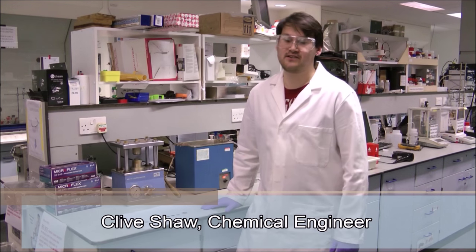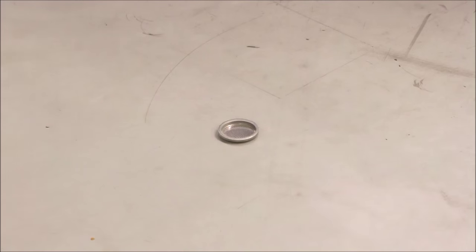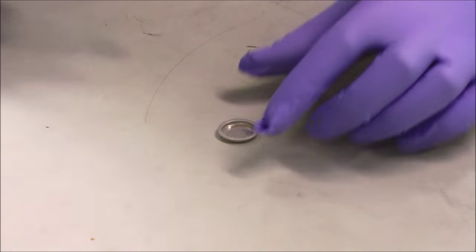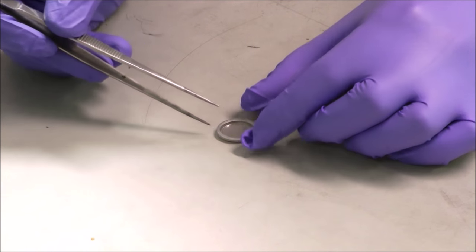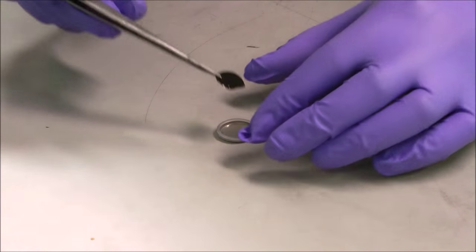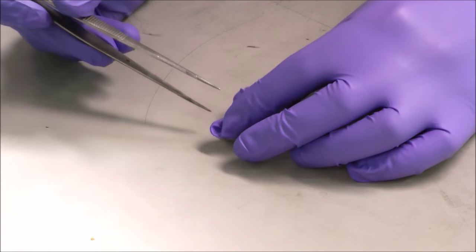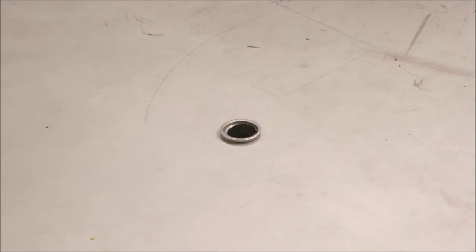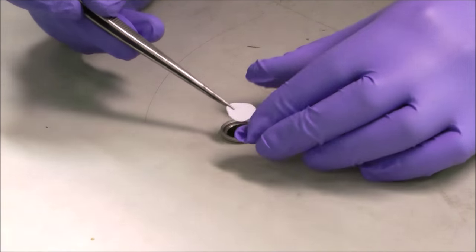With the carbon electrode prepared and all the other components ready, we can now assemble our supercapacitor coin cells. Starting with the bottom half of the coin cell case, a stainless steel spacer is first placed inside to protect the electrode and support even compression between the various components. The first electrode is then placed on top with the current collector side in contact with the spacer.